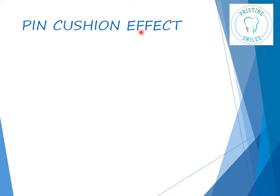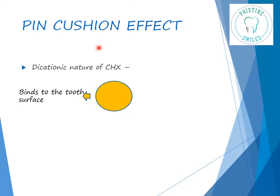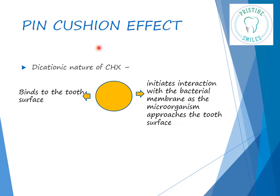Now, this is an interesting terminology known as the pincushion effect. Chlorhexidine is dicationic — it has two positively charged ions. This molecule attaches to the pellicle on the tooth surface by one cation, and the other one is free to interact with bacteria attempting to colonize the tooth surface. This prolongs the action of chlorhexidine. This is called the pincushion effect. This mechanism also explains why anionic substances such as sodium lauryl sulfate-based toothpaste decrease the plaque inhibition of chlorhexidine if used shortly after rinsing, as the free cation interacts with the anionic components of the toothpaste, rendering it absolutely useless.